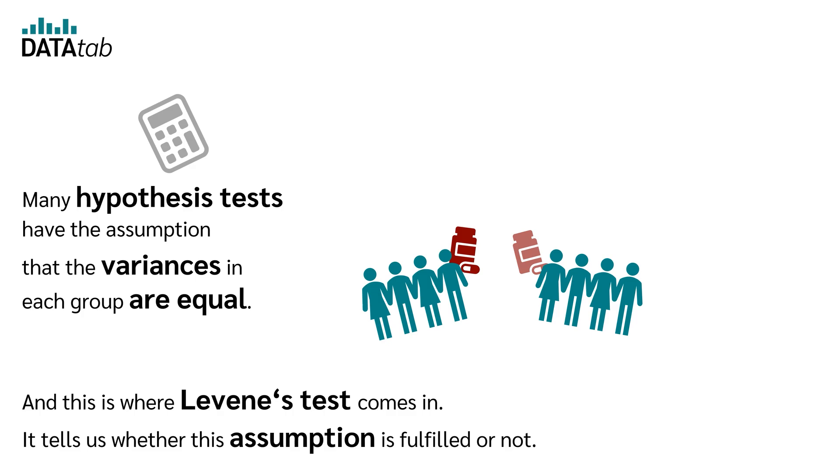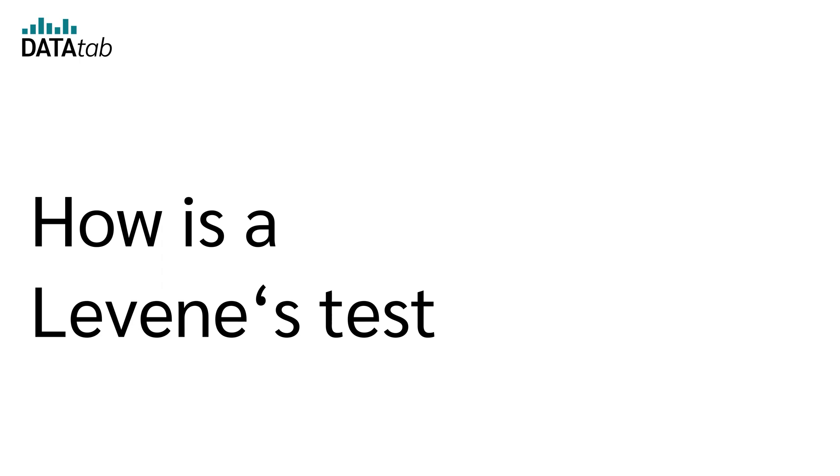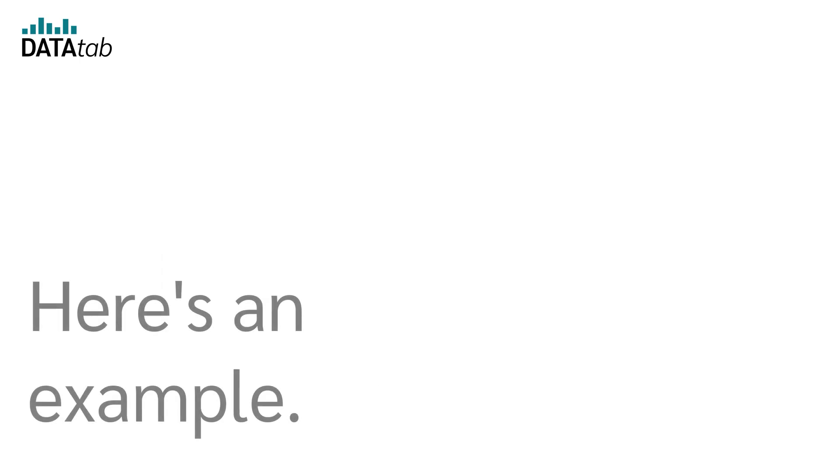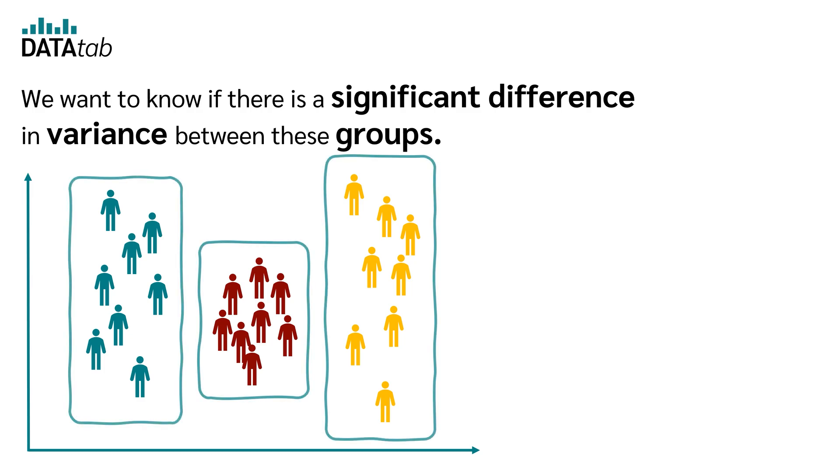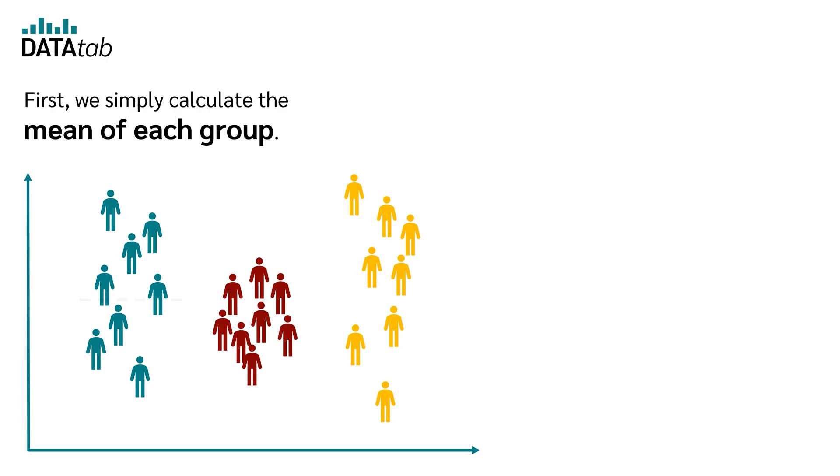How is a Levene's test calculated? Here's an example. We want to know if there is a significant difference in variance between these groups. First we simply calculate the mean of each group.